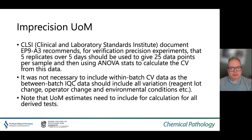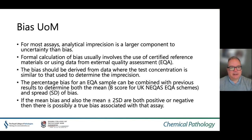Uncertainty measurement estimates need to be included for the calculation of all derived tests. For most assays, analytical imprecision is the larger component of uncertainty compared to bias. Formal calculation of bias usually involves the use of certified reference materials or data from external quality assessment schemes. The bias should be derived from data where the test concentration is similar to those used to determine imprecision. The percentage bias for an EQA sample can be combined with previous results to determine both the mean (the bias score for UK EQA schemes) and the spread or standard deviation of bias. If the mean bias and the mean plus or minus two standard deviations are both positive or negative, there is a possibility that a true bias is associated with that assay.